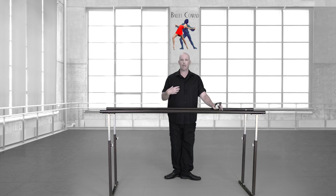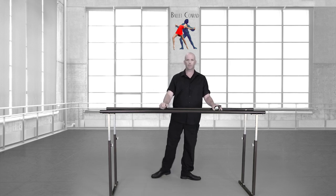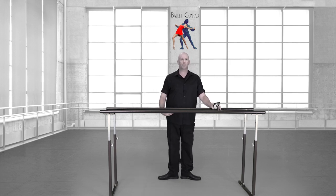Legs, back, and this is all turnout. The legs operate from turnout and nothing else, supported by the core and your back and straightening of the legs when they are straight.